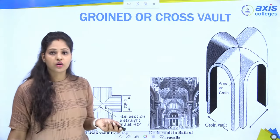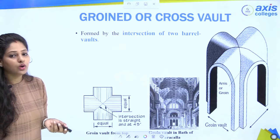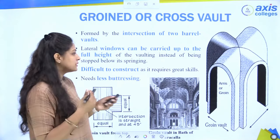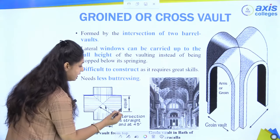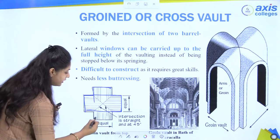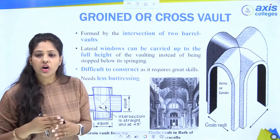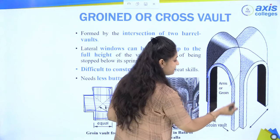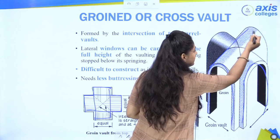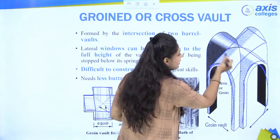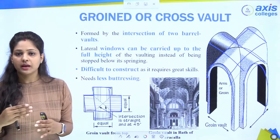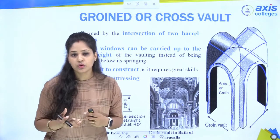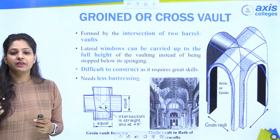The groin vault, or cross vault, is formed where two barrel vaults are interconnected at right angles. You can see one barrel vault and a second barrel vault crossing it — in plan view the two tunnel vaults cross each other to create a cross vault. It required very great skill and was difficult to construct, but it gave considerable height and was widely used.